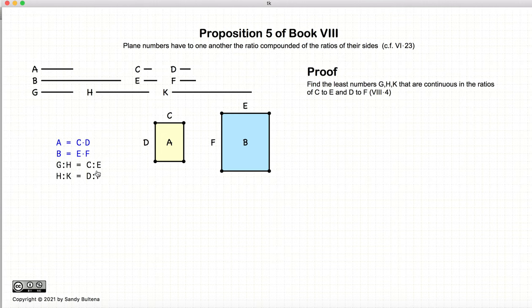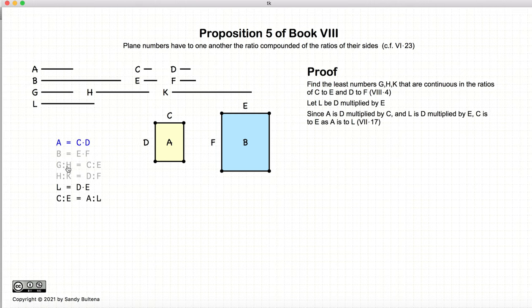So, now we have D times H equals C times E, and H times K equals D times F. Let's create a new number L, which will be D multiplied by E. Now, A is C times D, and L is D times E. So, if we cross out the Ds, we basically have that C to E is equal to A to L. Likewise, let's look at G to H and C to E. G to H is equal to C to E. C to E is equal to A to L. So, consequently, G to H equals A to L.